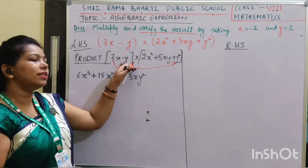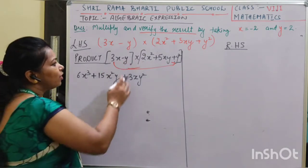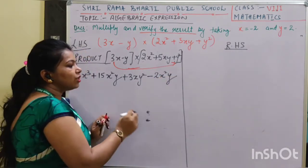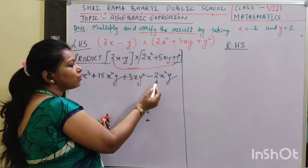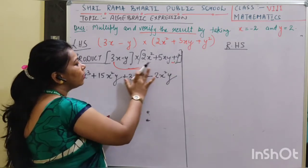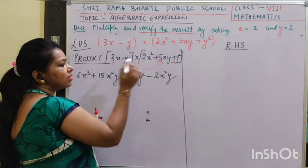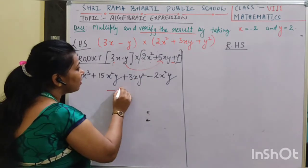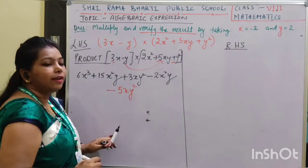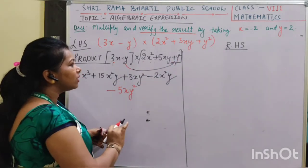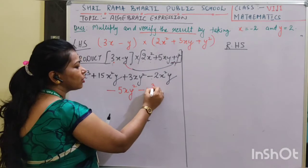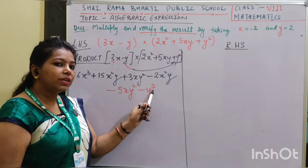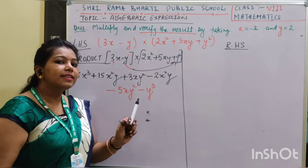Now we will continue the same procedure with the second term, as we have done in the previous class. So we will continue with negative y. Negative y into 2x squared would be minus 2x squared y — children, here you can notice it is a negative number multiplied by a positive, so the answer will be negative. Negative positive gives negative, so it gives minus 5xy squared. And multiplying with the last term gives minus y cubed, because y to the power 1 times y squared gives y cubed, and negative times positive gives negative.